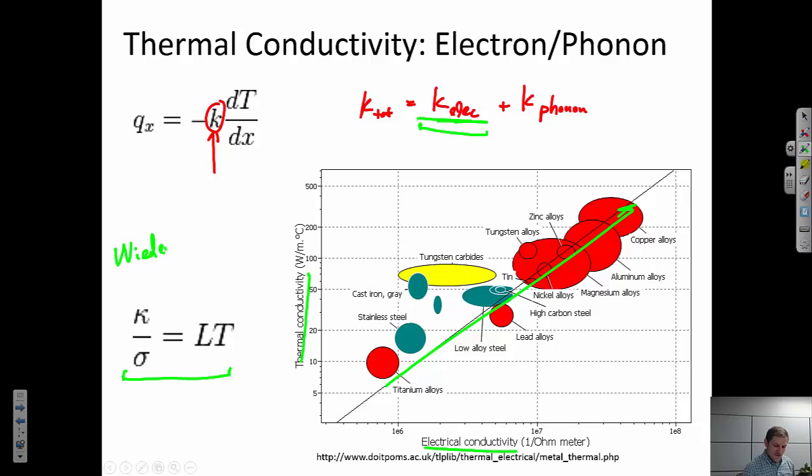So this is what we call the Wiedermann-Franz relationship. And basically it says that thermal conductivity, sorry, thermal conductivity and electrical conductivity are roughly proportional to each other. And that proportionality is L, which is the Lorentz factor, times the temperature of the system.